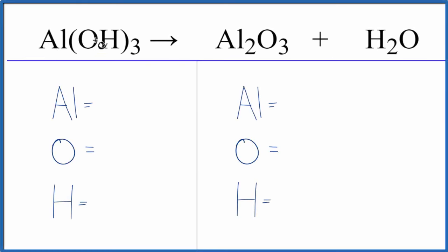To balance the equation, AlOH3, that's aluminum hydroxide, decomposing into Al2O3 plus H2O, aluminum oxide and water, let's count the atoms up on each side of the equation.